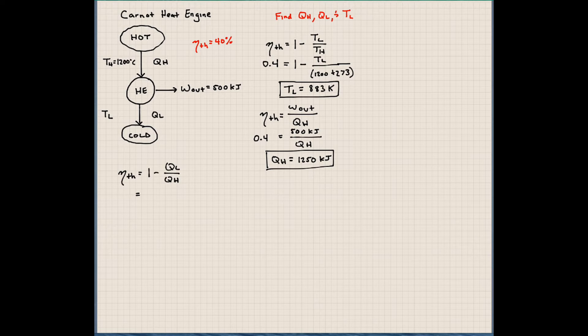So this would be 1 minus QL, which we have that given. Or, I'm sorry, let's see. QL, we don't know what QL is actually, that's what we're trying to find. And QH is given as something we just solved, 1250 kilojoules.